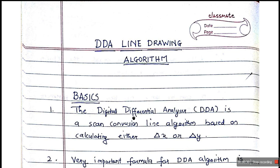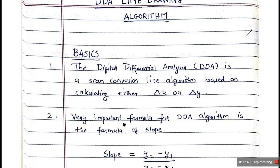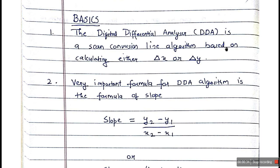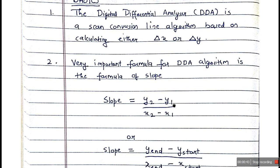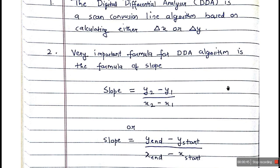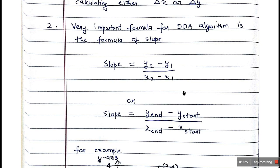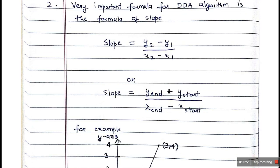First, we'll cover the basics. The Digital Differential Analyzer is a scan conversion line algorithm based on calculating either DX or DY — that is, delta X or delta Y. The key formula for the DDA algorithm is the slope formula: slope equals Y2 minus Y1 divided by X2 minus X1, or equivalently, Y-end minus Y-start divided by X-end minus X-start.